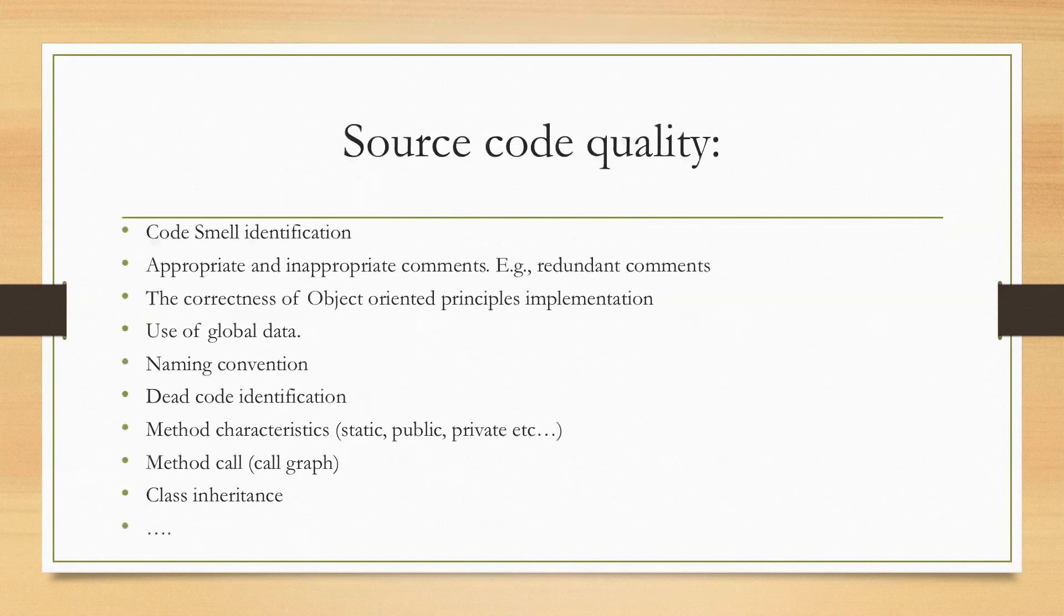This module has two main phases. The first phase focuses on source code quality metrics such as dead code identification, code smell identification, appropriate and inappropriate comments such as redundant comments, the correctness of object-oriented principles implementation, the amount of global variable usage in the source code, naming convention, and many other source code quality metrics from literature.